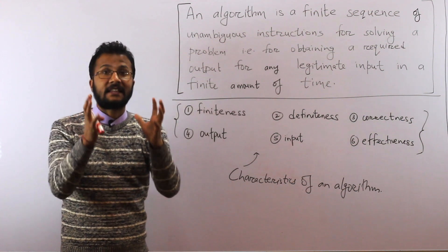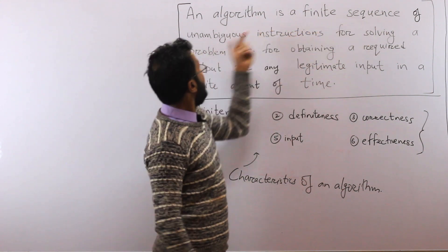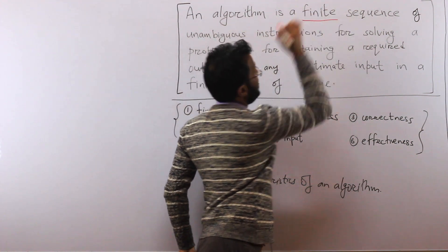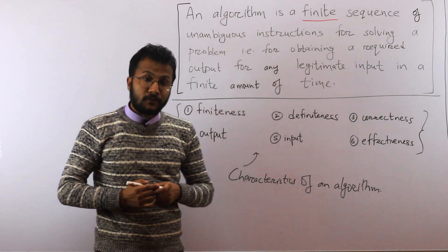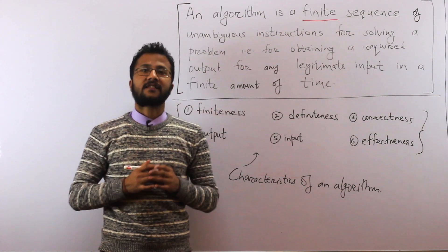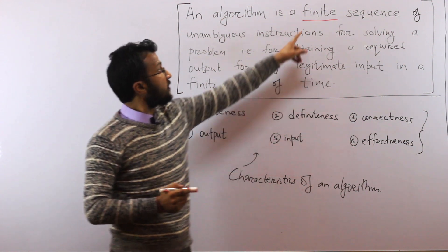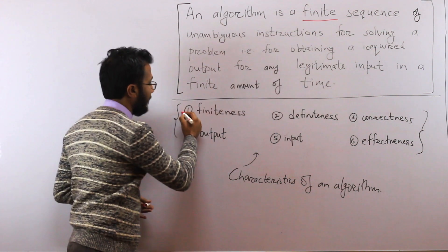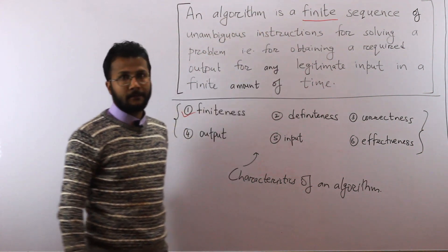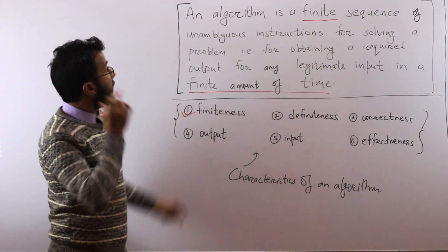When we talk about an algorithm, the first thing that comes to mind is that it's a sequence of instructions. But it should be a finite sequence of instructions — your algorithm should have a finite set of steps. Your algorithm should halt after some time; it should not run for an infinite amount of time. So the first property of an algorithm is finiteness — it should stop after a finite amount of time.